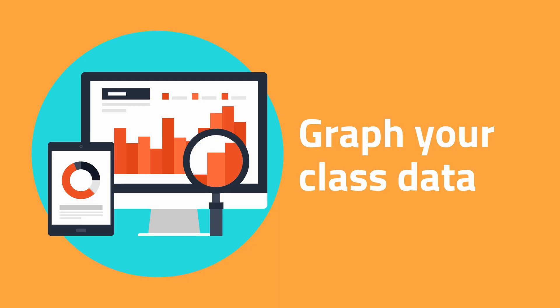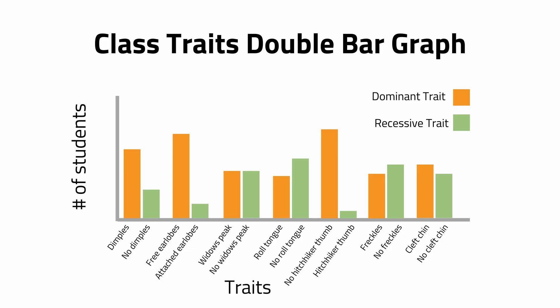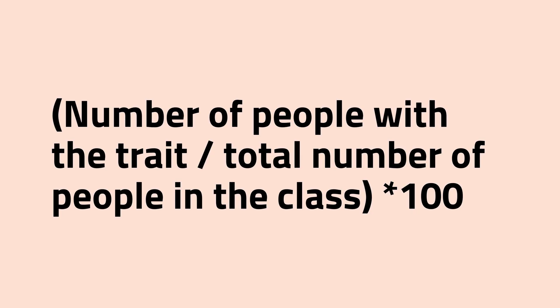Now it's time to graph your class data. Once your results are recorded in the table, share your data with the rest of the class. You'll need to take inventory of the rest of the class's genetic traits. You can record your class's data by drawing a bar graph on graph paper, or entering data into Excel or Google Sheets and making a graph using the software. Another option is to graph percentages of people in a group with a given trait — you can create a percentage by using this formula. And that's it — we hope you had fun with this activity for Maine Bioscience Day.